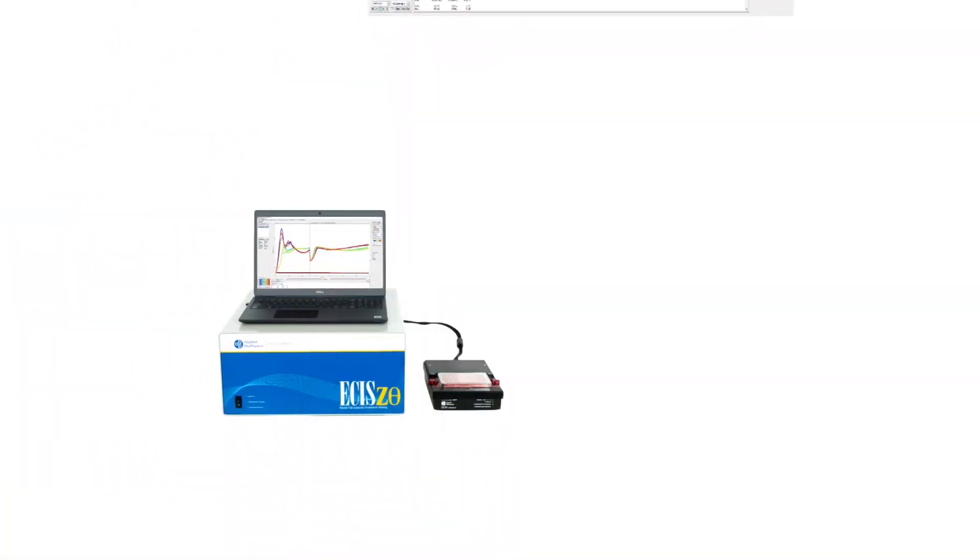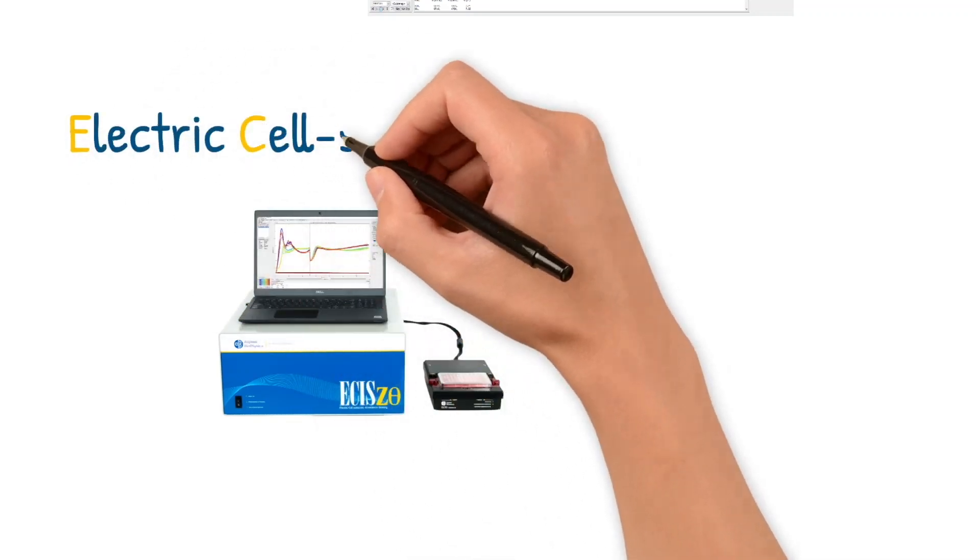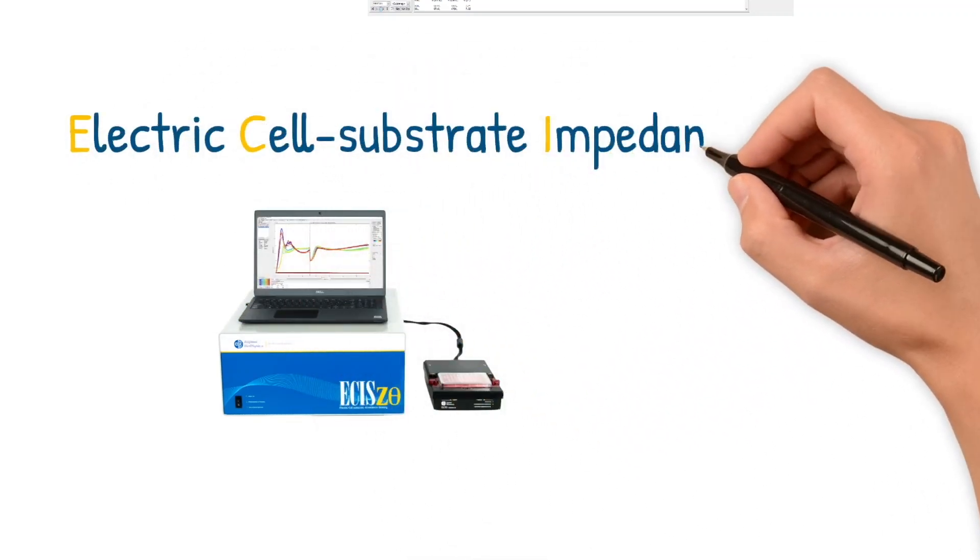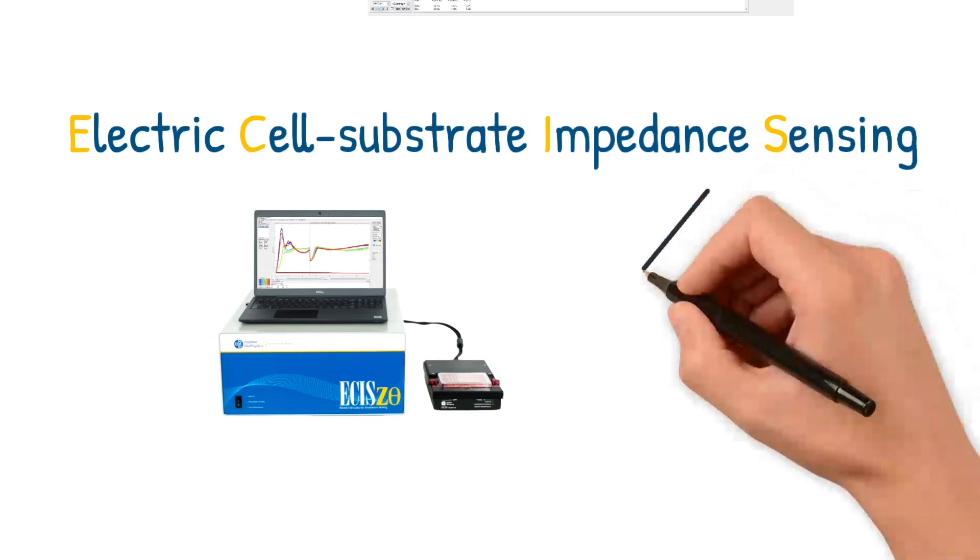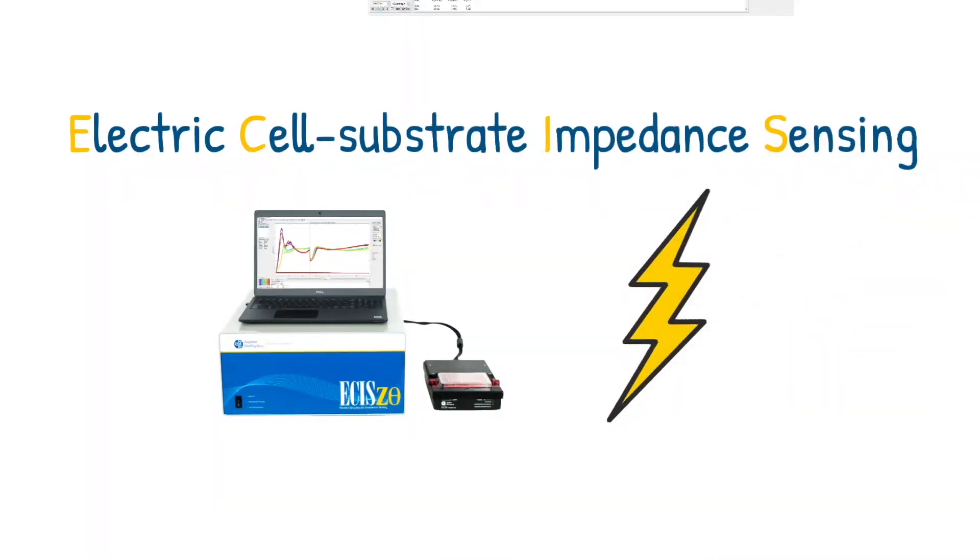So what is ECIS? ECIS stands for Electric Cell Substrate Impedance Sensing and is a way to use electrical currents to electrically view and quantify cell behaviors in a culture dish, as opposed to optically viewing them.